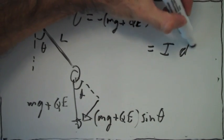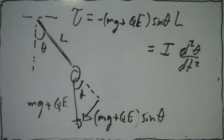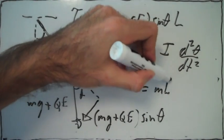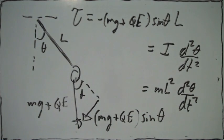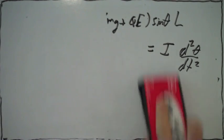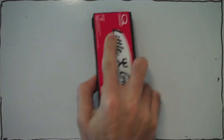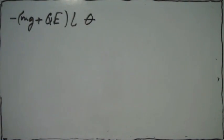That total torque is equal to I times alpha, the angular acceleration. This is the main equation that we need. I is just ml squared. Once we have this equation, we're basically done with the problem. Let's just write down this equation more neatly — this is the total torque acting on the mass.